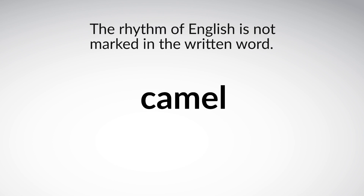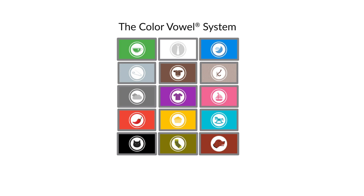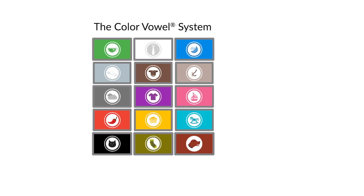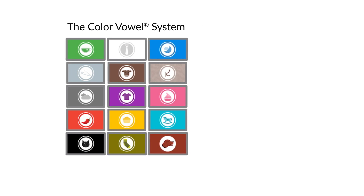Is this word camel or camel? Speaking English comprehensibly depends on knowing which syllable is stressed and knowing how to create the rhythm. Written English doesn't answer these questions, but the Color Vowel System does.